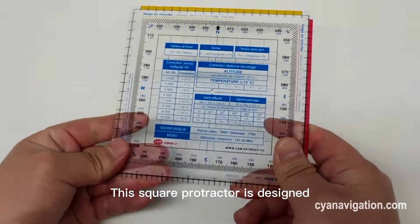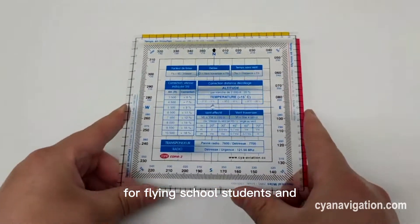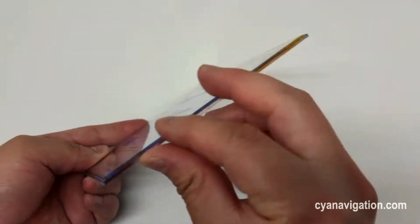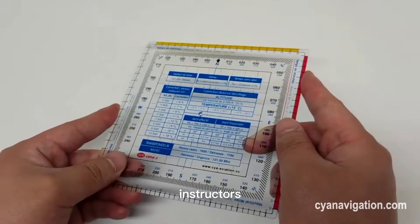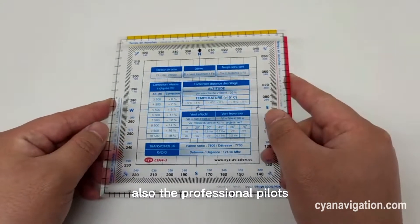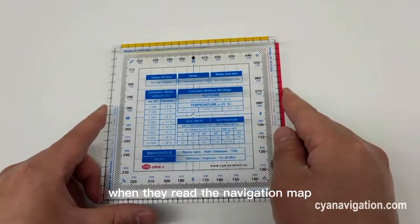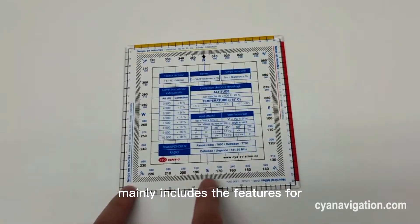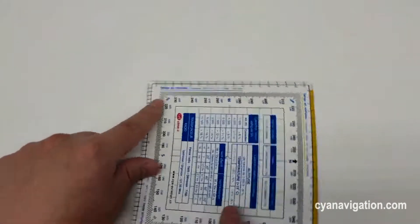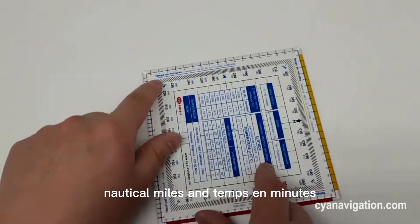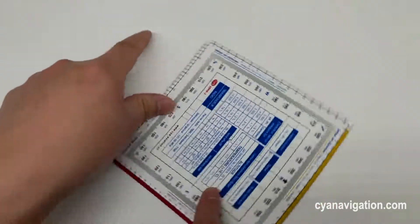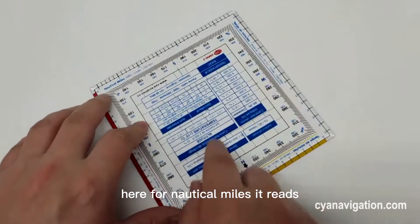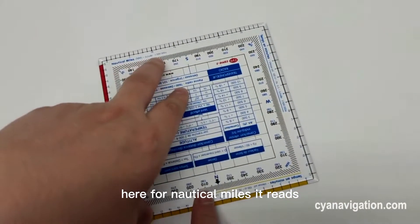This square protractor is designed for flying school students, instructors, and professional pilots when they read navigation maps. It mainly includes features for nautical miles and temps and minutes. When we check its edges here for nautical miles, it reads...